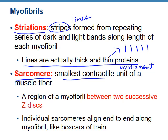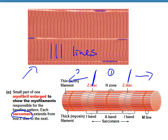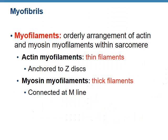A sarcomere is the smallest contractile unit of a muscle fiber cell — it's the region between two successive Z-discs. Individual sarcomeres align end to end along the myofibrils, like boxcars of a train. In the figures from your book showing striations, the sarcomere runs from Z-disc to Z-disc. They line up — one here, another here — and the sarcomere is the smallest contractile unit that will contract and then relax.